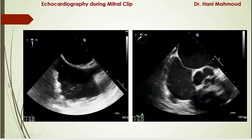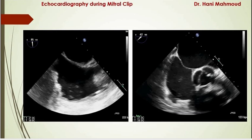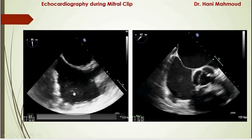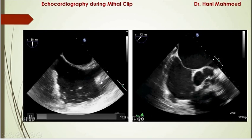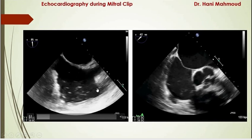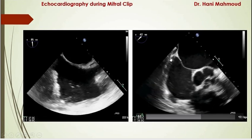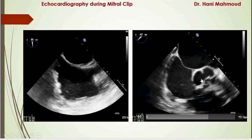We have to assess the intra-atrial septum very well before any procedure that includes septal puncture. This is the bicaval view, one of the longitudinal views from the mid-esophageal level. Here are the superior vena cava, inferior vena cava, right atrium, crista terminalis, right atrial appendage, and the left atrium. This is the short axis base view with the aortic valve in short axis.